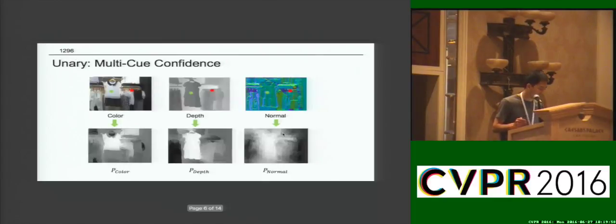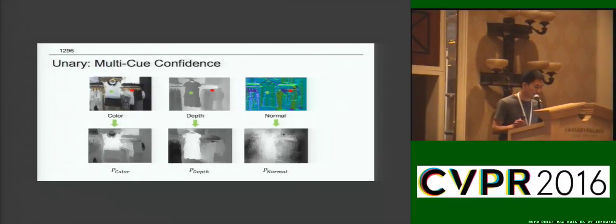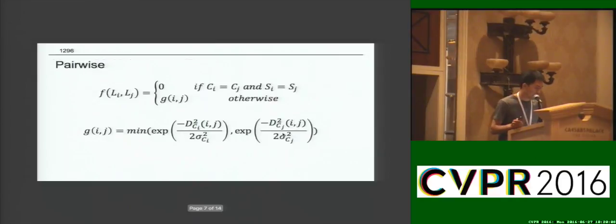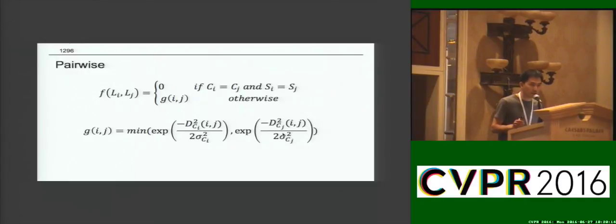For the unary term, we compute a probabilistic confidence map based on geodesic distance for each cue. For the pairwise term, we define a unified cost to deal with cases where nearby pixels have the same cue label or different cue labels.